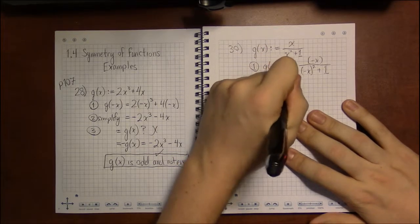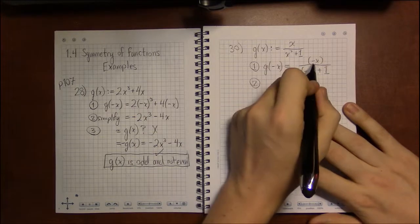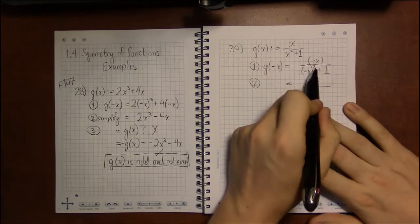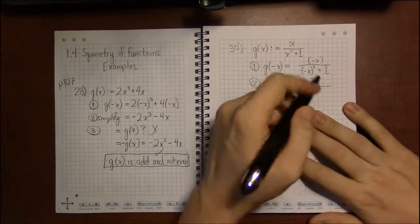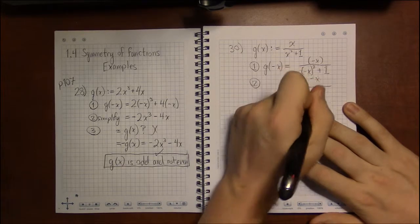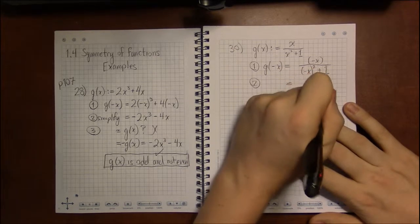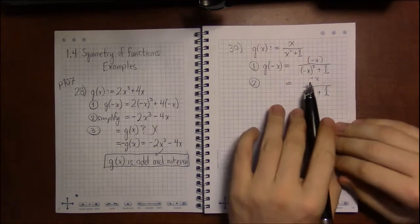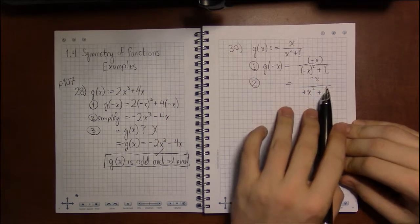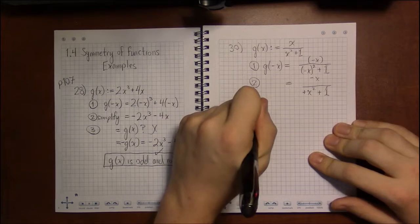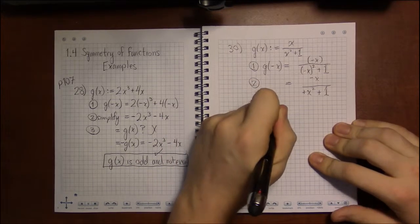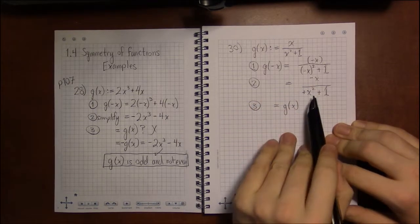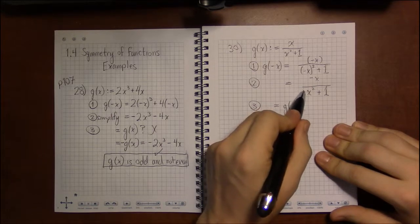We simplify. Minus x is just minus x in the numerator. In the denominator, (minus x) squared is minus x times minus x — two negatives multiplied together give a positive, and two x's give x squared. So what we have is negative x over x squared plus 1. Now we check: is this equal to the original? No — the denominators are the same, but the numerators are different; this numerator has an extra negative sign.